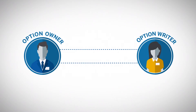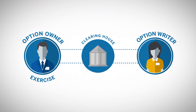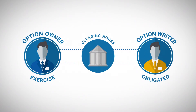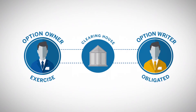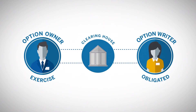When an option owner exercises the right embedded in the contract, someone has to be assigned the duty of fulfilling the obligation. And it may not be the original person who sold the option. The process of assigning options is performed by the central clearinghouse. CME Clearing uses an algorithm to randomize the assignment of the option sellers.